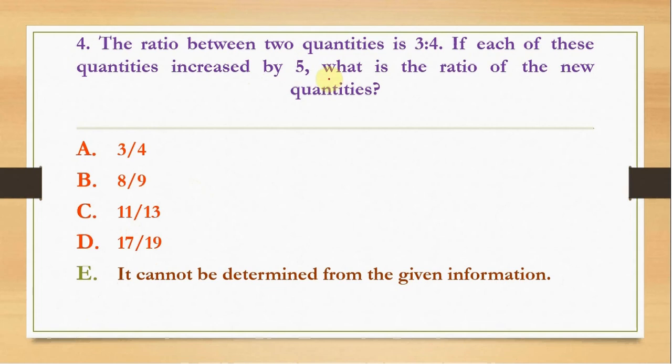Question number 4 is about a ratio. Ratio of two quantities is 3 is to 4. If we add 5 to each of them what will be the ratio of the quantities? So for example if we add 5 to each of them, answer B will come up.